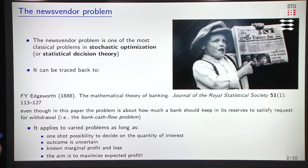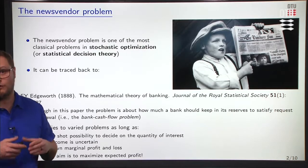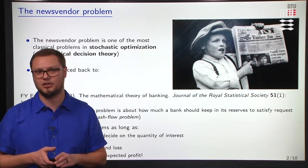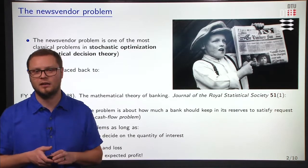The newsvendor problem is one of the most classical problems in stochastic optimization and statistical decision theory. It can actually be traced back to Edgeworth, who in 1888 already published his paper on the mathematical theory of banking. In this paper, the problem is not about the newsvendor, it's about how much a bank should keep in cash in its reserve to satisfy requests for withdrawal. Today, it would be referred to as the bank cash flow problem, and it is of relevance, for instance, for figuring out how much cash should be placed in the ATM machines that we use regularly for cash withdrawal.